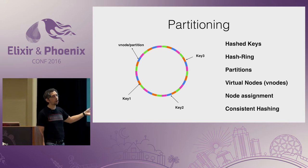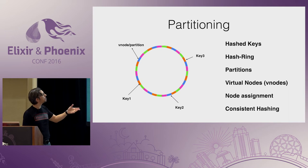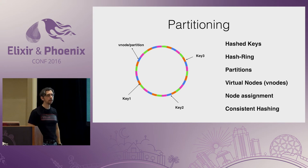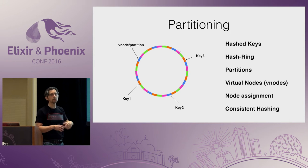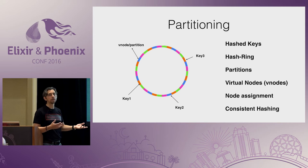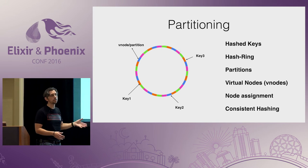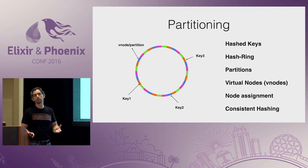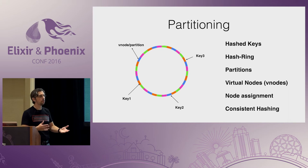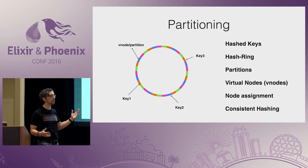This is called consistent hashing. It's consistent because if a node goes down — let's say the green node — all those partitions are distributed to other nodes, and all the other partitions and nodes will be unaffected. This differs from simpler techniques like hashing and doing a modulo of the number of nodes, because in that situation if you get a new node or another node goes away, all the hashes get redistributed and affect everything — which is obviously not a good thing.